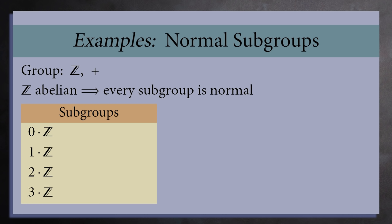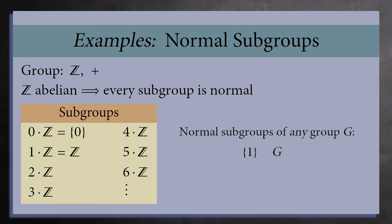The subgroups are the multiples of 0, 1, 2, 3, 4, etc. The first two subgroups are the group of just 0 and the entire set of integers. Every group has at least these two normal subgroups, the group of just the identity element and the entire group. But these normal subgroups do not tell us anything about the group.